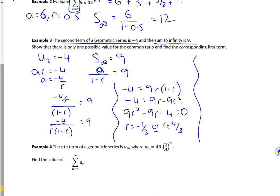So it gives me r as minus a third, or r is 4 thirds. Now the issue is, remember, that r has to go between plus and minus 1. So r is minus a third. Now it wants, so show that there's only one possible value of the common ratio. Yep, I've got that. And find the corresponding first term. So a is minus 4 over r, a is minus 4 over minus a third, a is 12. There we go.